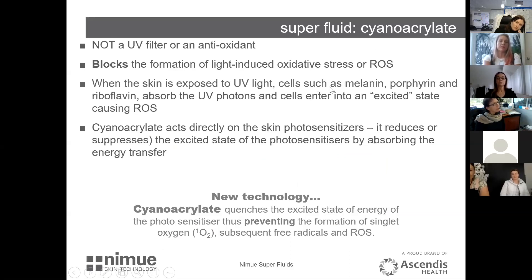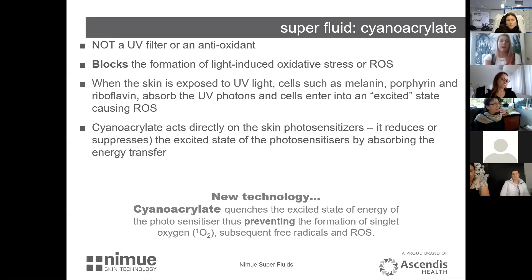CA blocks the formation of light-induced oxidative stress. When skin is exposed to UV light, light-absorbing cells — such as melanin, porphyrins, and riboflavin — absorb the UV and get excited, creating reactive oxygen species. CA acts directly on these photosensitizers and absorbs that energy, stopping the reactive oxygen species from forming in the first place. It reduces or suppresses the excited state of the photosensitizers by absorbing the energy transfer.